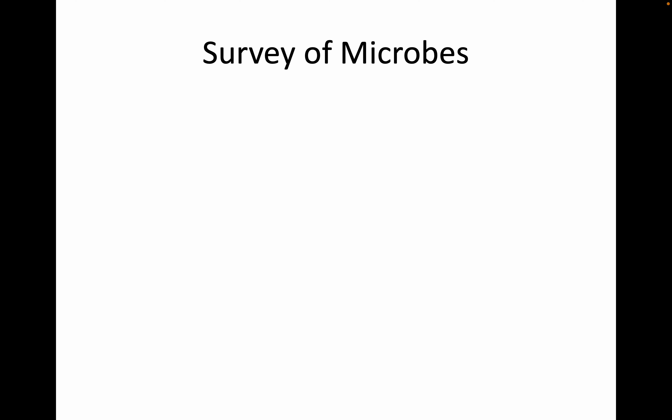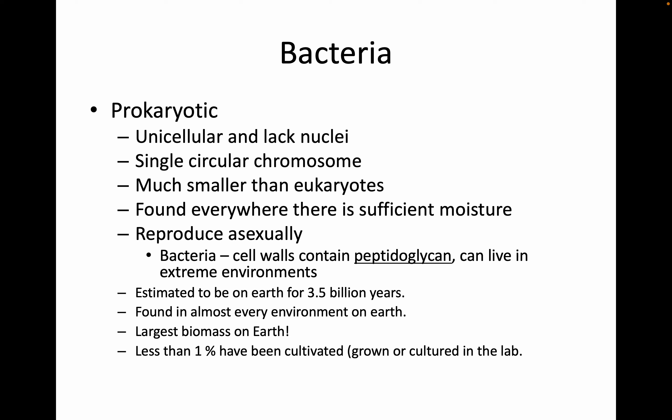Let's survey the variety of microbes on earth. Bacteria will be the major focus of this class. Bacteria are in domain prokaryote — they're prokaryotes, single-celled, and their cells don't have a membrane-bound nucleus. They do contain a single circular chromosome, but they're much smaller than eukaryotic cells. They're found everywhere that there's sufficient moisture.